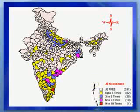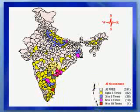The recognition of Japanese encephalitis based on serological surveys was first made in Tamil Nadu in 1955. Subsequent surveys carried out by the National Institute of Virology, Pune, indicated that about half the population in South India had neutralizing antibodies. A total of 26 states and union territories have reported Japanese encephalitis cases.